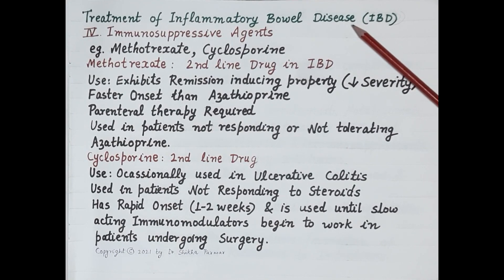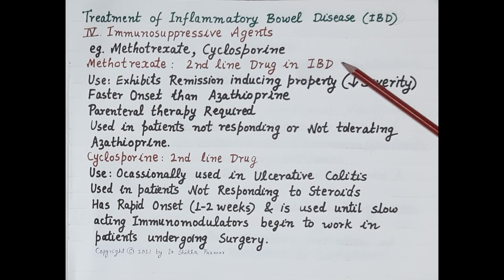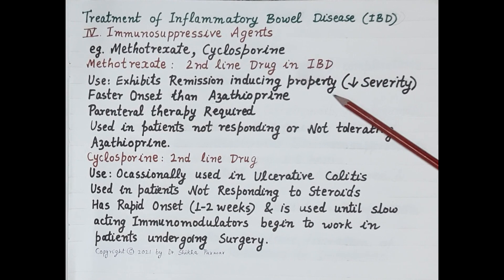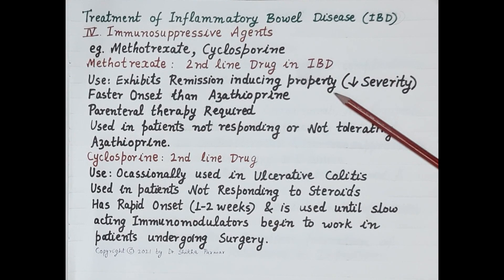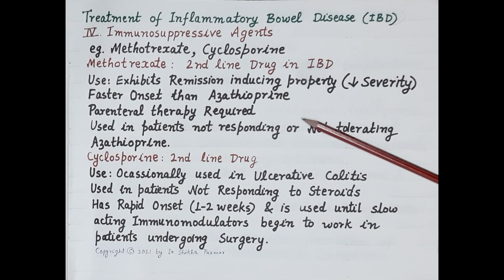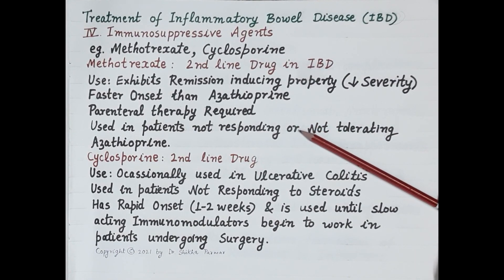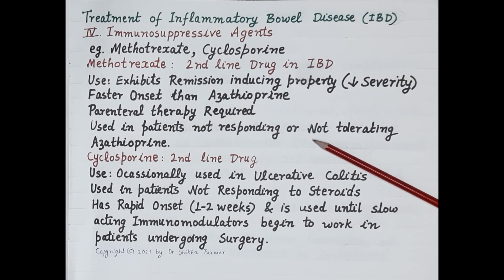The immunosuppressive drugs — methotrexate and cyclosporine — are second-line drugs for IBD. Methotrexate is an immunosuppressant specifically useful in Crohn's disease. It exhibits remission-inducing properties and has a faster onset than azathioprine, so it can be used in its place. However, absorption and efficacy of methotrexate are poor after oral administration in IBD, so weekly parenteral therapy is required. Since intravenous methotrexate produces higher side effects, it is used in patients not responding to or not tolerating azathioprine.